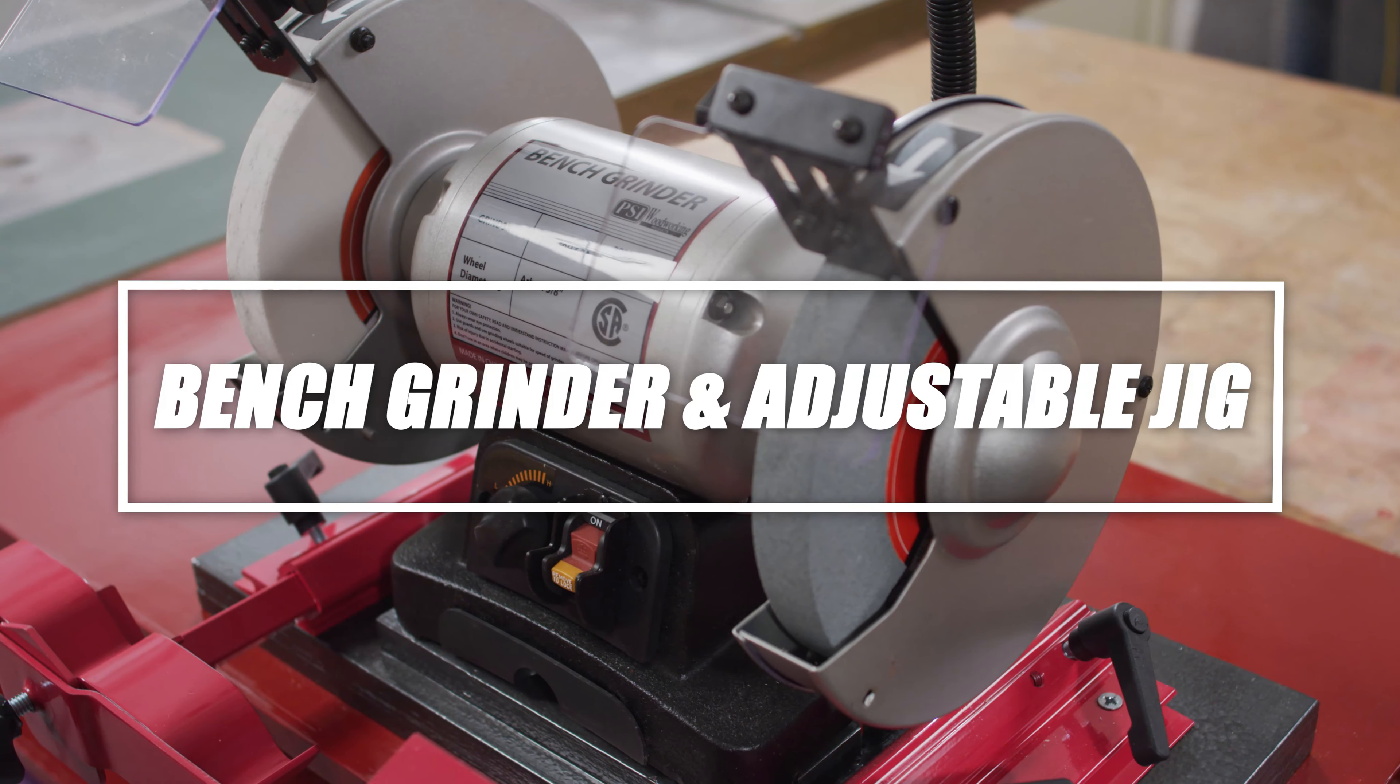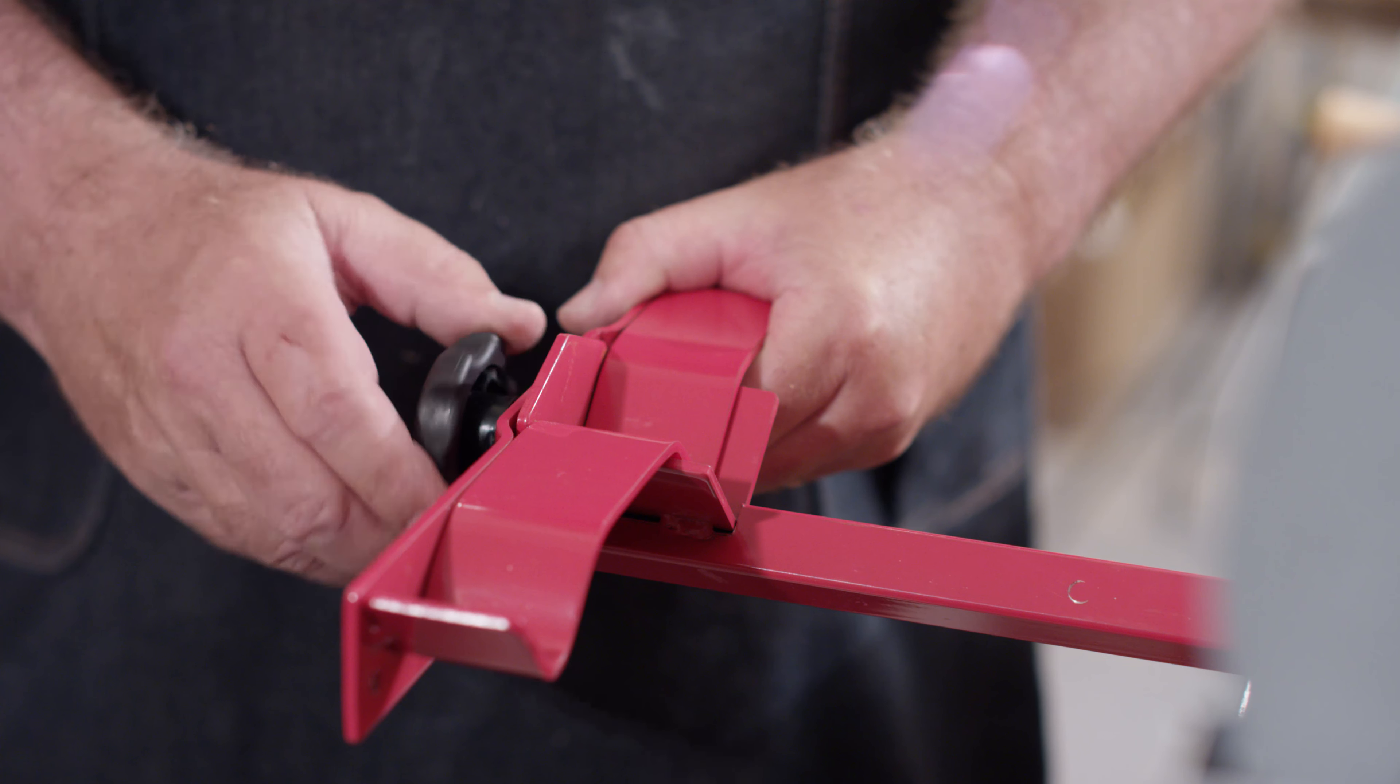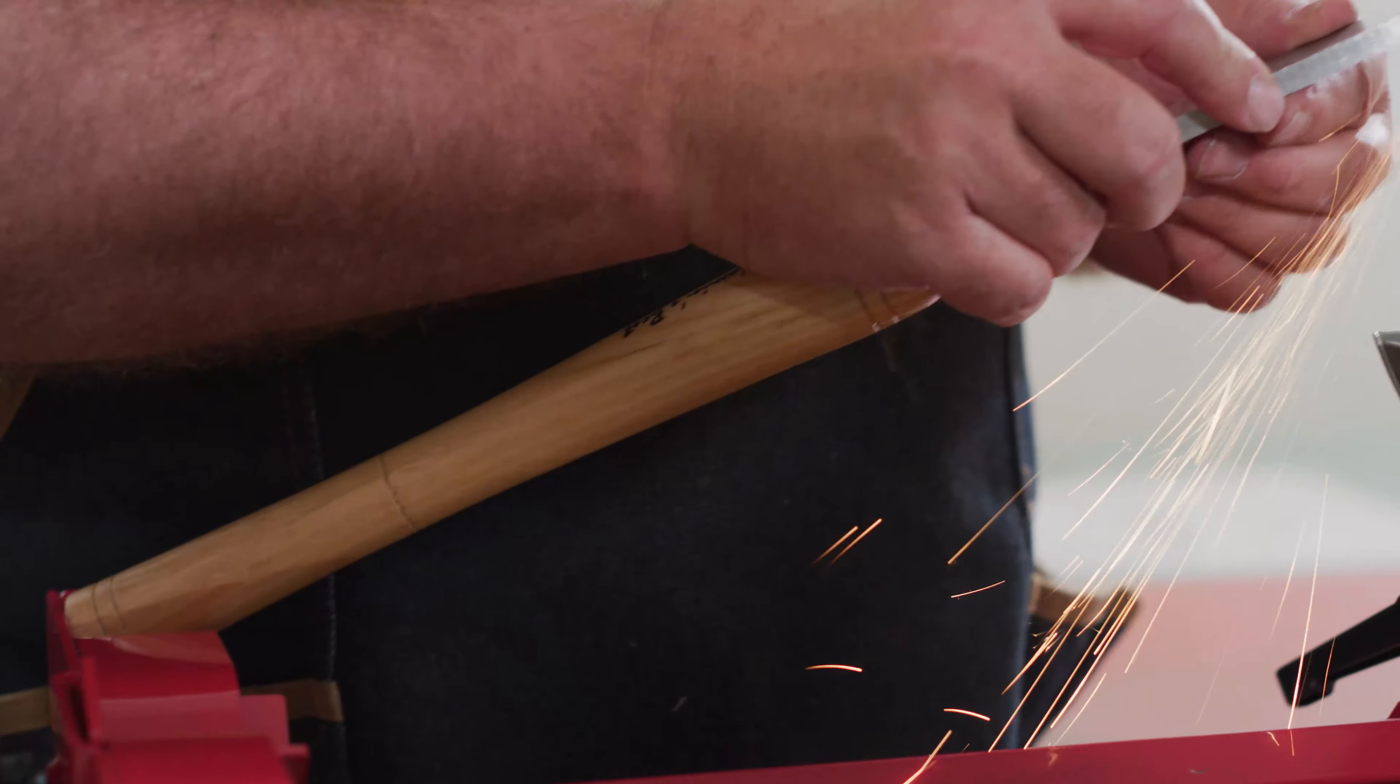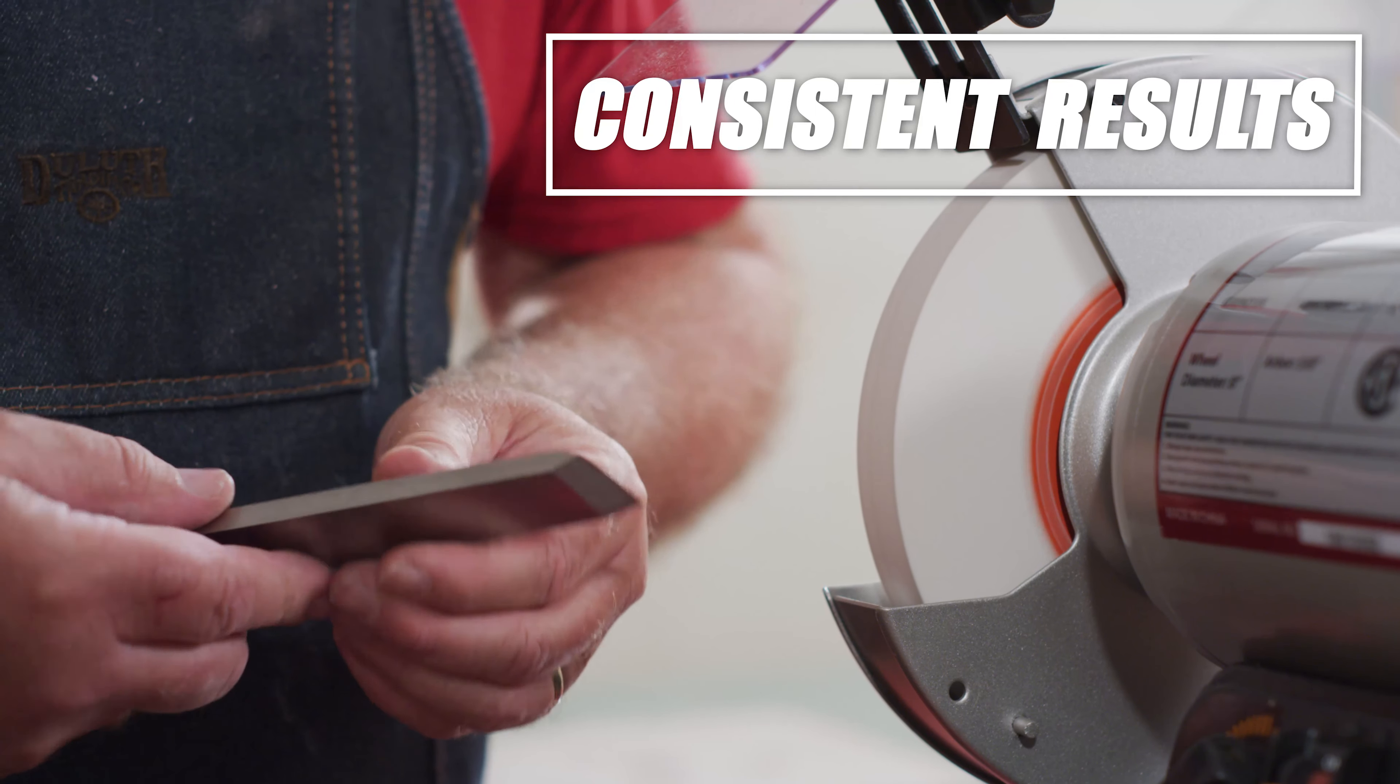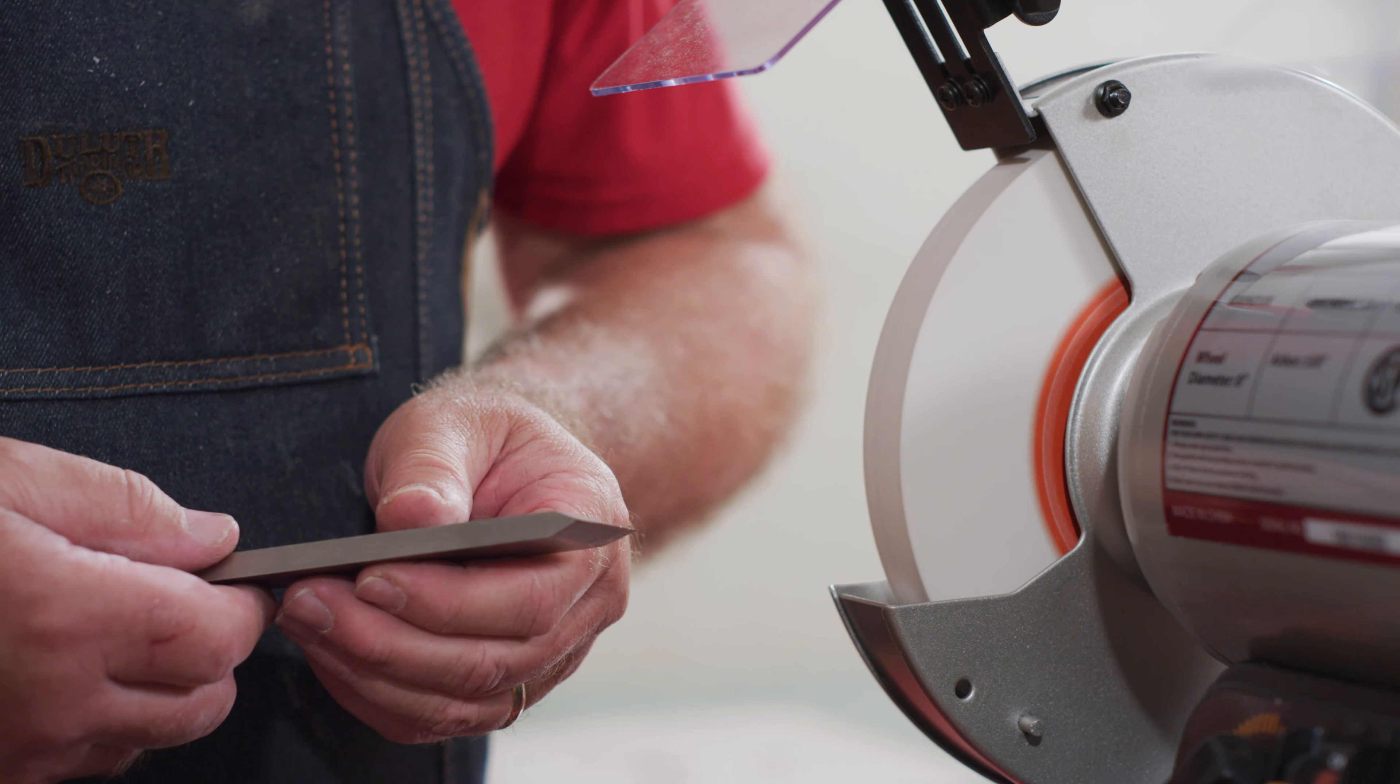A great system to accomplish this is a bench grinder and multi-purpose adjustable jig. There are several sharpening systems on the market, all of which support your tools during the sharpening process. This allows for consistent results from tool to tool and is simpler than trying to sharpen tools freehand.